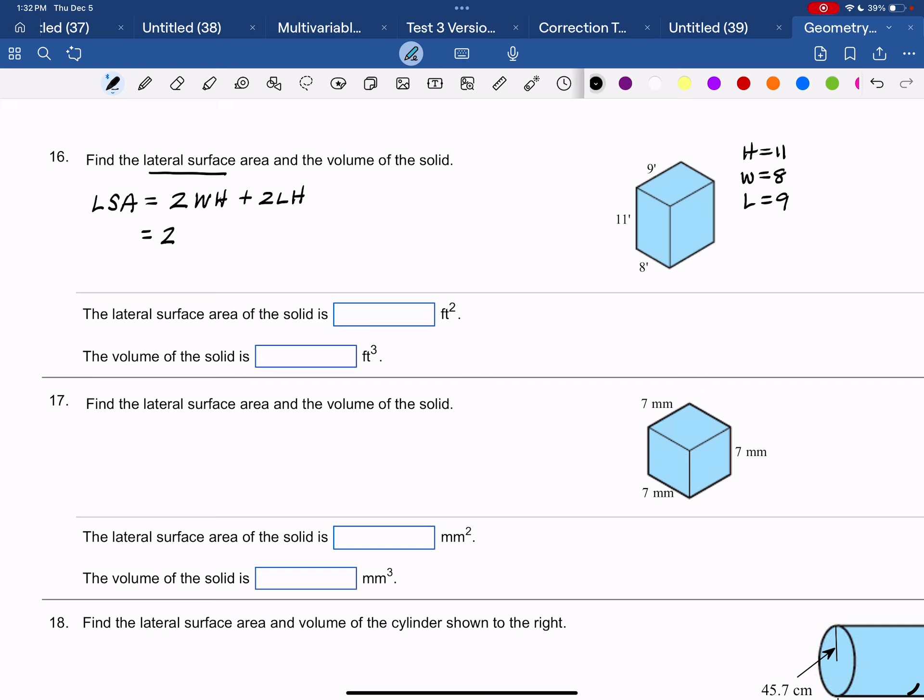So 2 times 8 times 11 plus 2 times 9 times 11. So 2 times 8 times 11 is 176. 2 times 9 times 11 is 198.